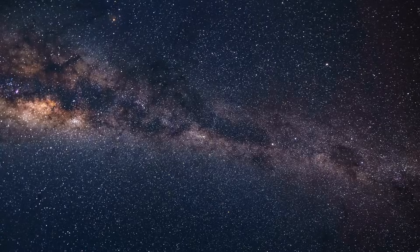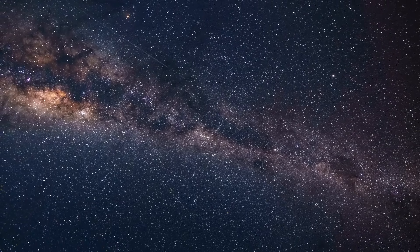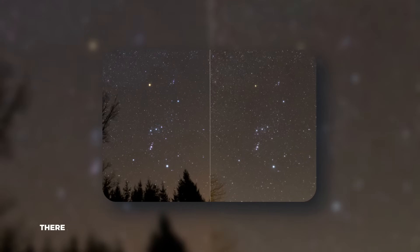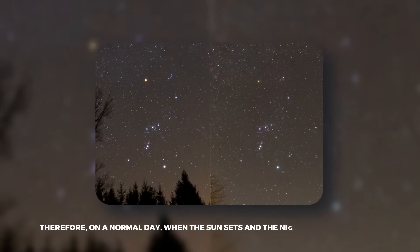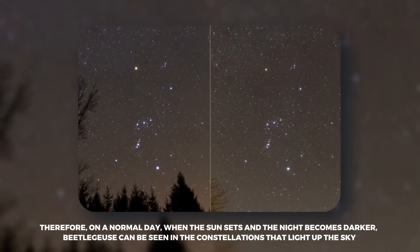With the exception of Antarctica, almost every inhabited place on Earth can see the star once it reaches mid-September and continues to do so until mid-March. Therefore, on a normal day, when the sun sets and the night becomes darker, Betelgeuse can be seen in the constellations that light up the sky.